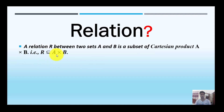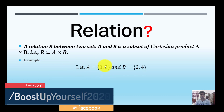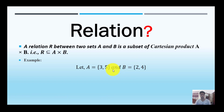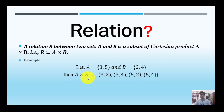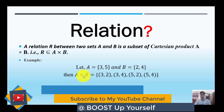So R is a subset of A cross B. For example, A is a subset of {3, 5} and B is a subset of {2, 4}. Here A is a subset of X and B is a subset of Y. This is the cross product, also called the Cartesian product.